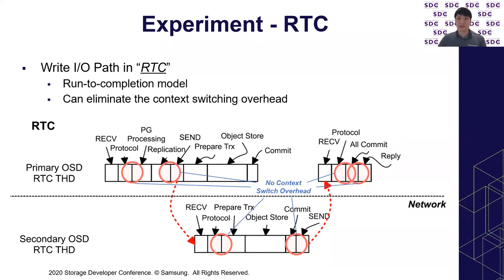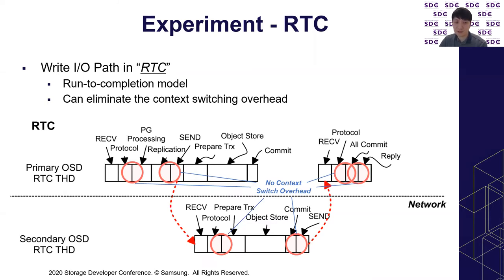To understand the overhead, we modified SAP's OSD threading model by changing it from baseline to run-to-completion. In run-to-completion, one thread performs all tasks to process the write request in the OSD, including post-processing which happens after receiving an ACK from the replica. Compared to the baseline, we think we can eliminate context-switch overhead by adopting this model, because run-to-completion entails locality which has positive effects on the system.